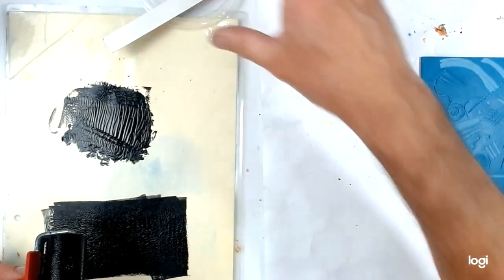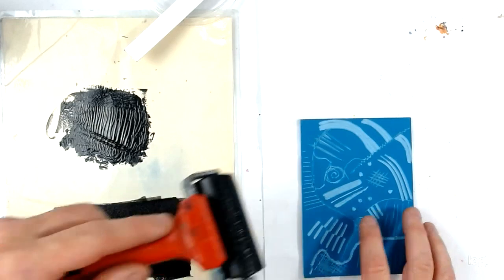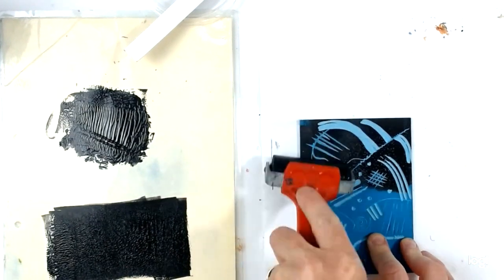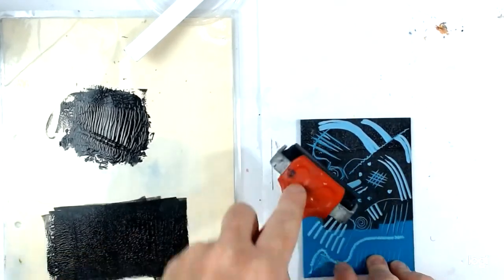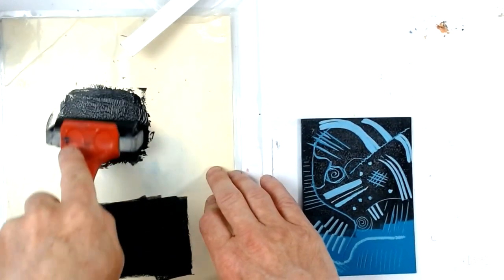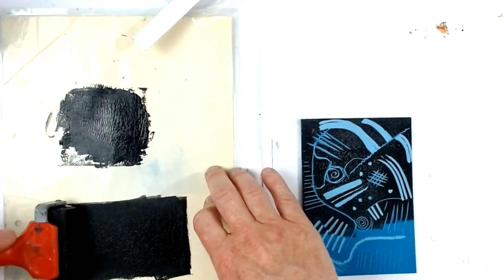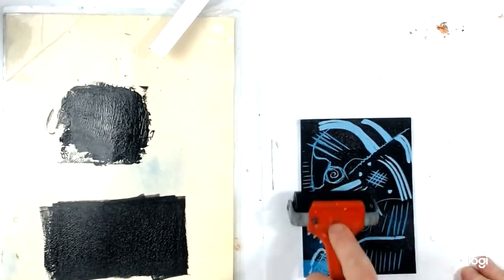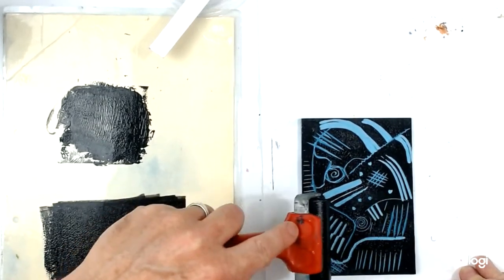So I'm moving the ink out of the way and inking up my lino plate. So I'm rolling the ink carefully over. I'm trying to make sure it covers it nice and evenly. And as I start to work down, I can see the ink getting a little bit too thin. So I reload my roller from the reservoir. I roll it out again to the right consistency, rough sandpaper, and then I ink. Make sure I get right to the edge. Okay, that's nice and evenly covered.